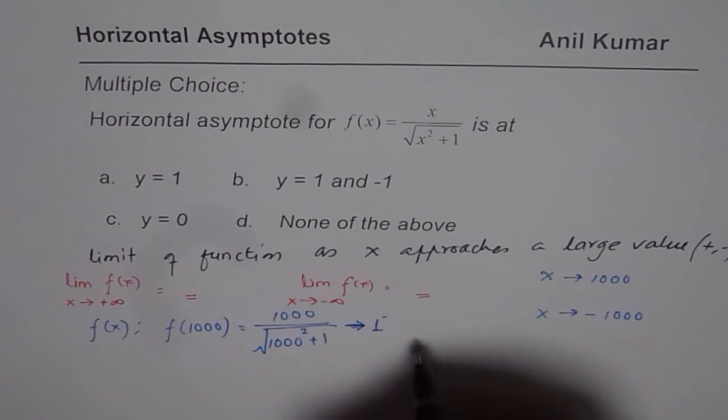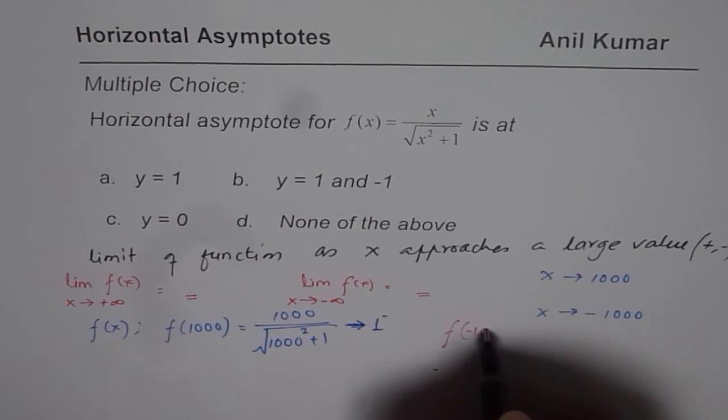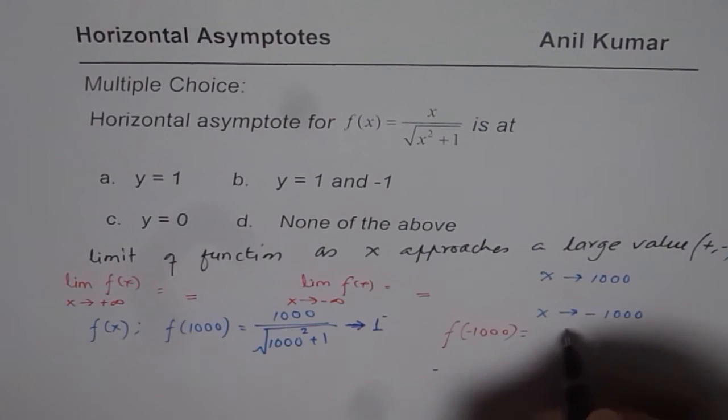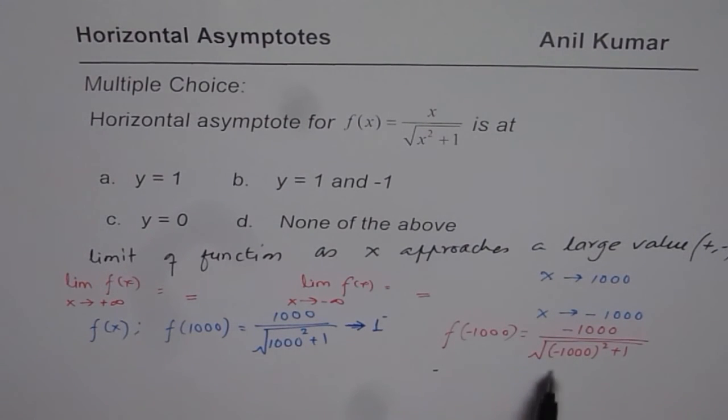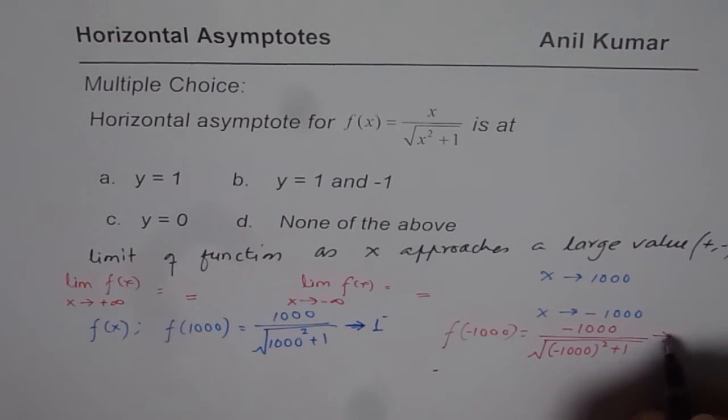Similarly, if I substitute minus 1000 here. So in that case, I get minus 1000 divided by square root of minus 1000 squared plus 1. Now since the numerator is negative, denominator is positive, we do get a number which is very close to 1, but it's negative. Do you see that? Negative 1.